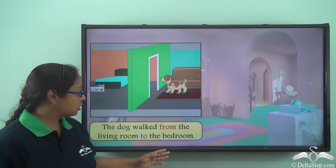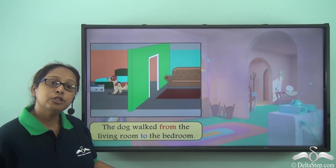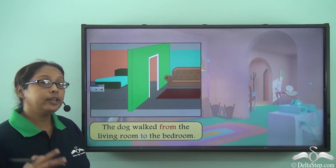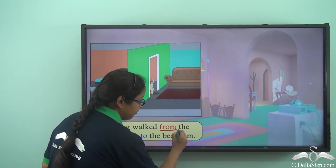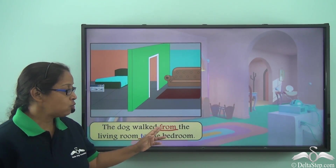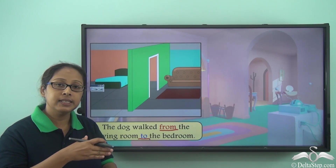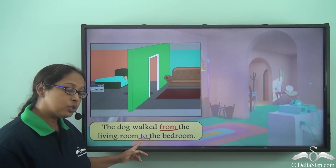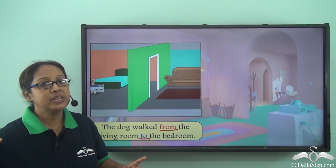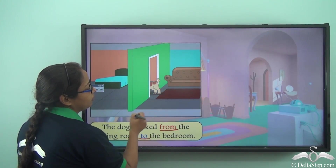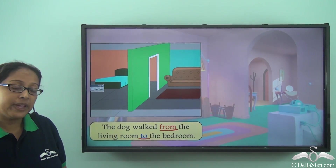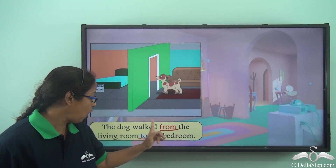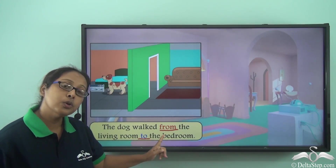The dog walked from the living room to the bedroom. There are two prepositions in the sentence: 'from' and 'to'. When we use 'from' we mean it is starting at one point, and when we use 'to' it means it is ending at one point. So the dog walked from the living room to the bedroom.